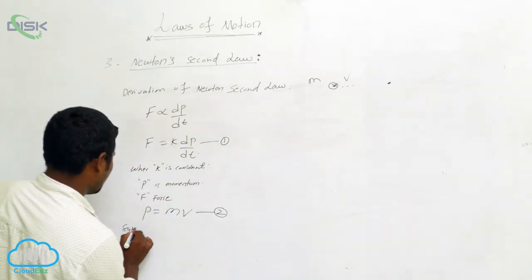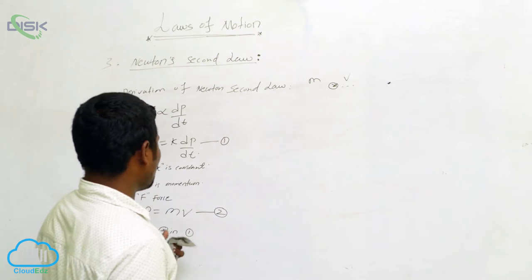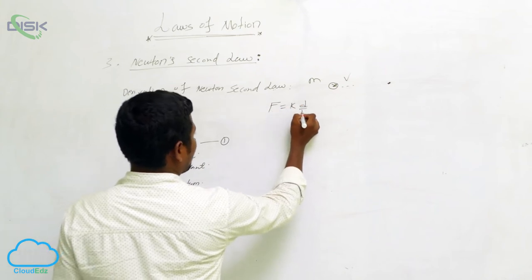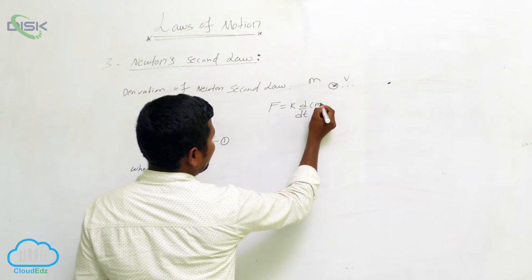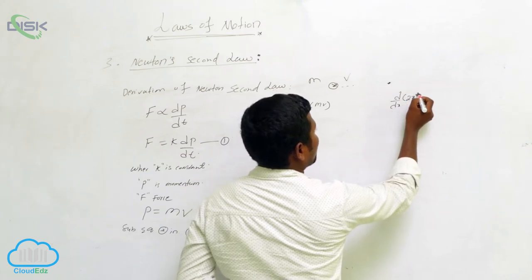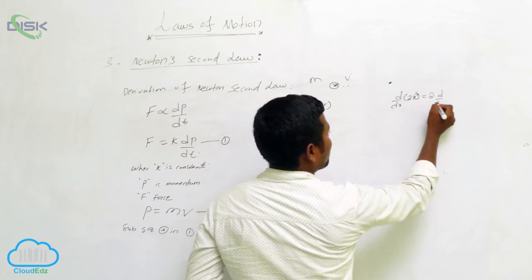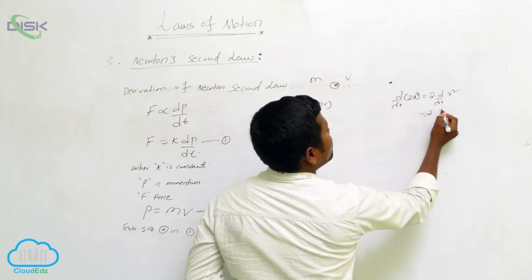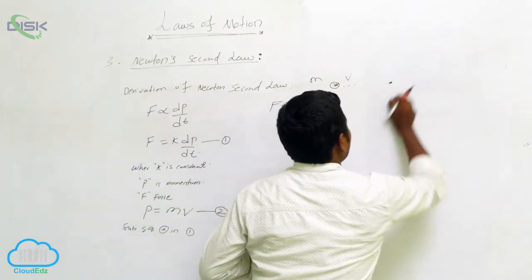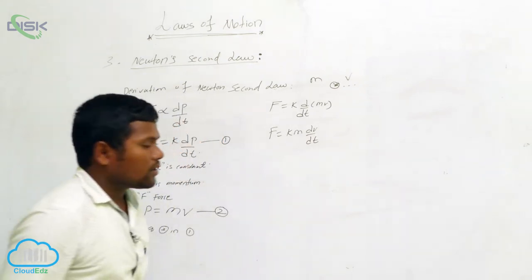Now I am going to substitute equation two into equation one. Equation two is p equals mv, and equation one is F equals k into dp/dt. So F equals k into d/dt of mv. Since m is a constant it comes outside the derivative, giving F equals k·m·dv/dt.